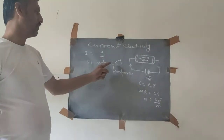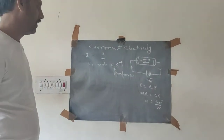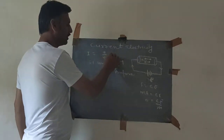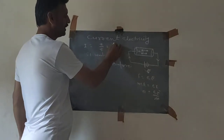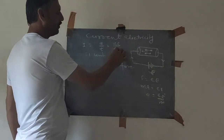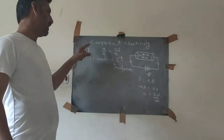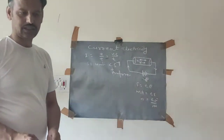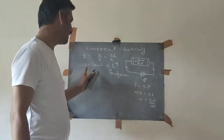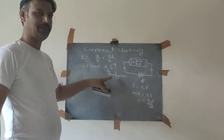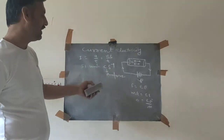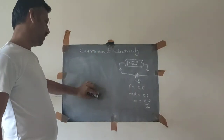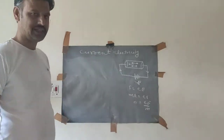Current is said to be 1 ampere if 1 coulomb of charge is flowing per second. Since current is due to the flow of charge, the rate of flow of charge is current. We can write Q = ne, therefore I = ne/t. The SI unit is coulomb per second, which is the ampere.